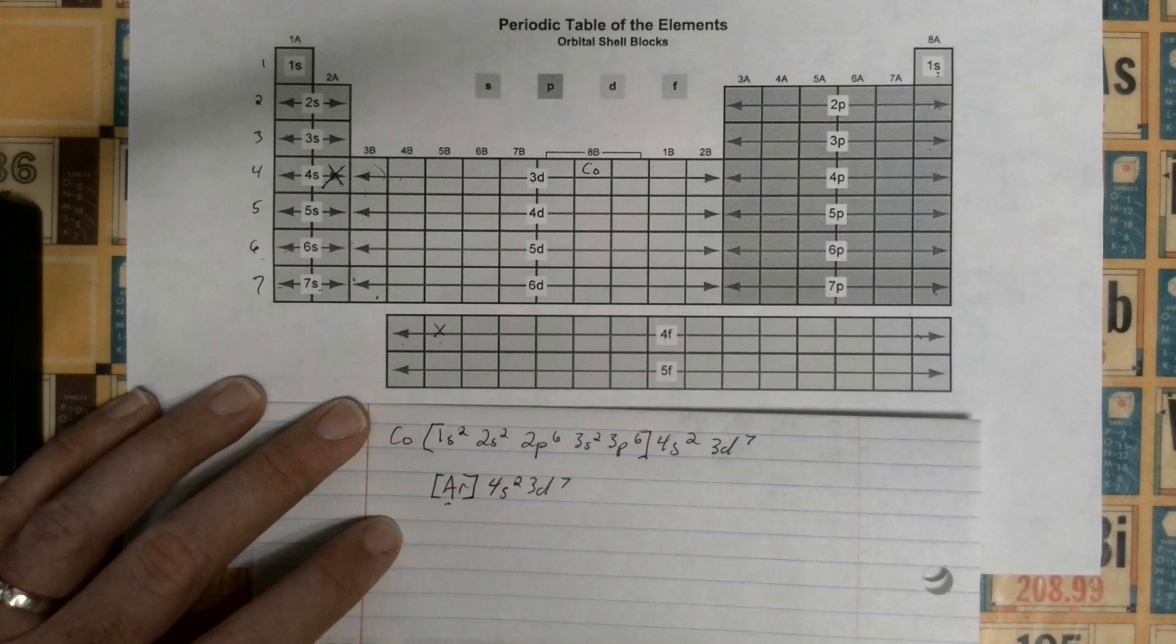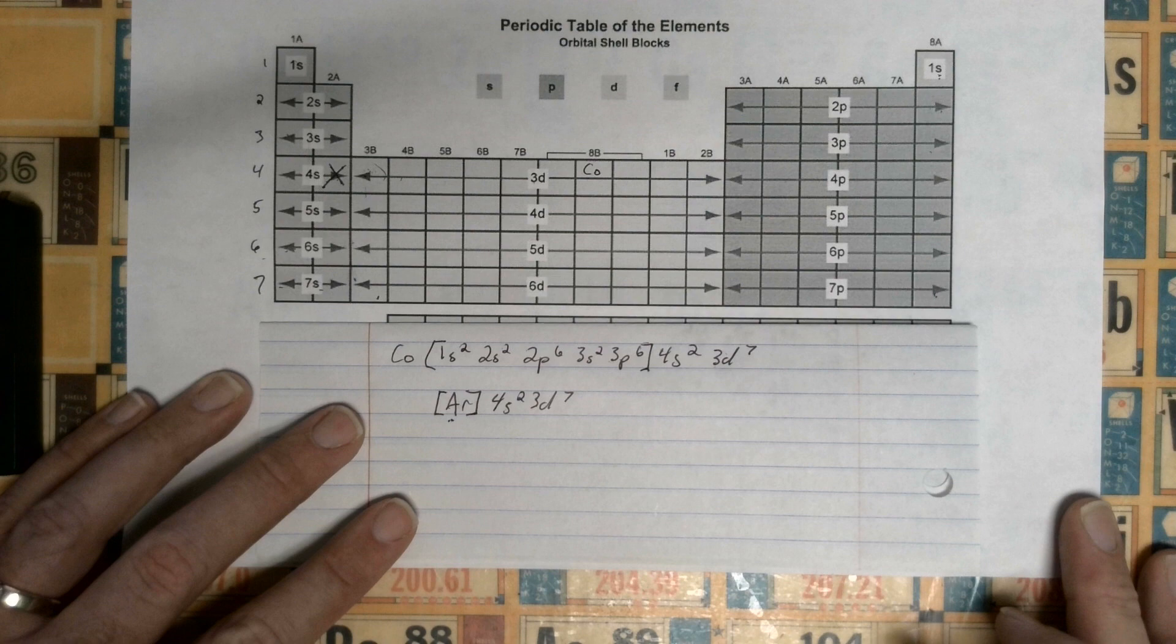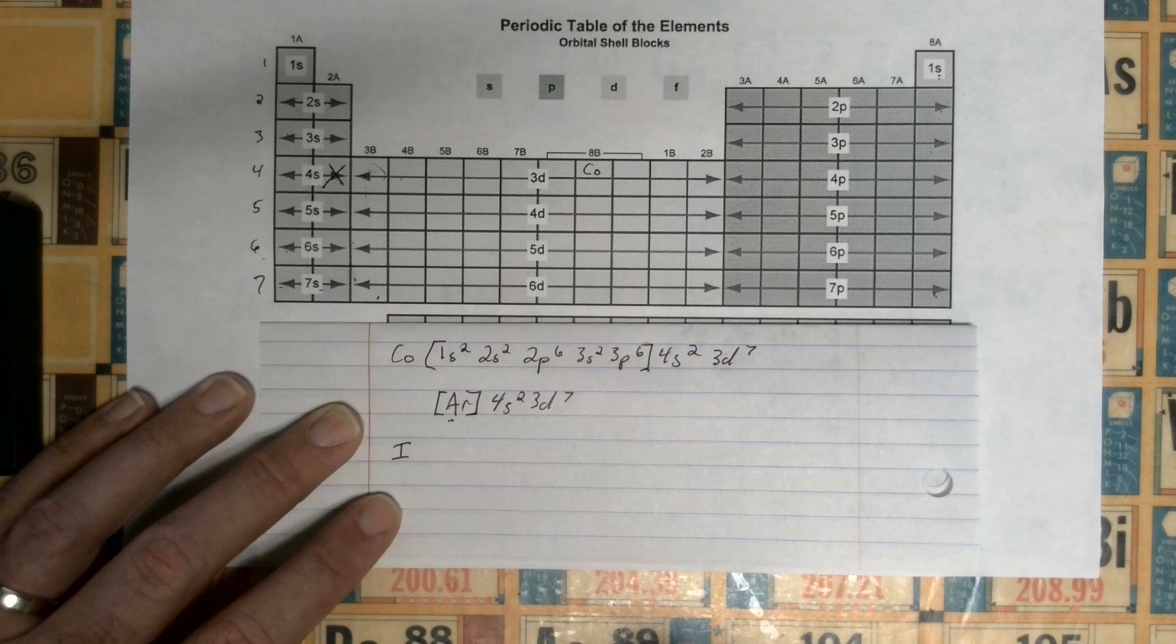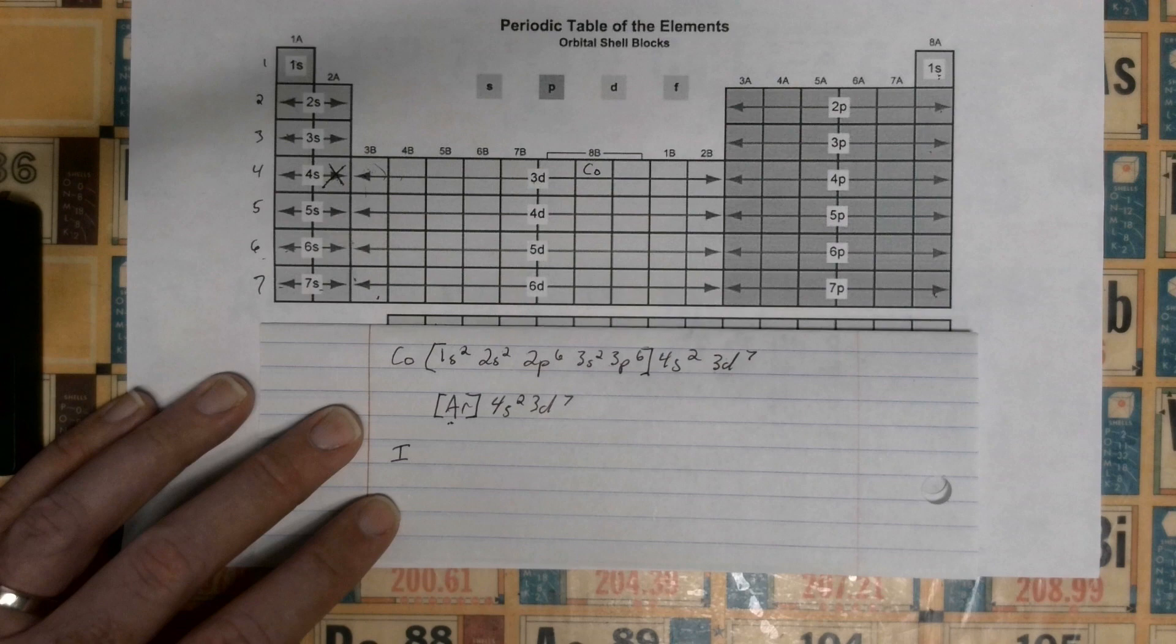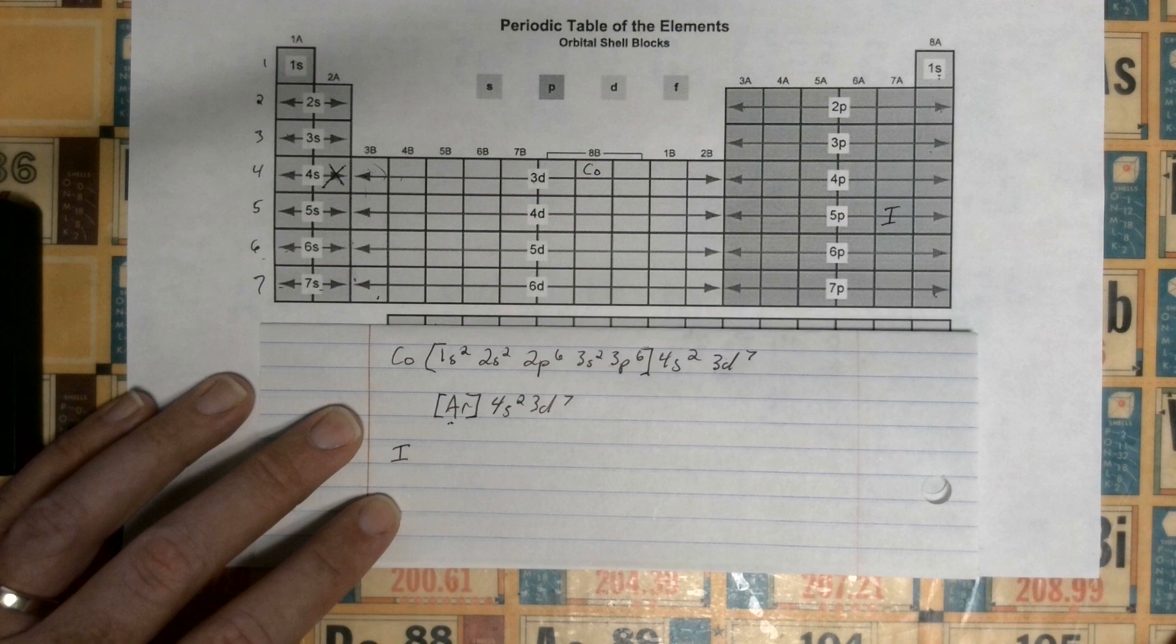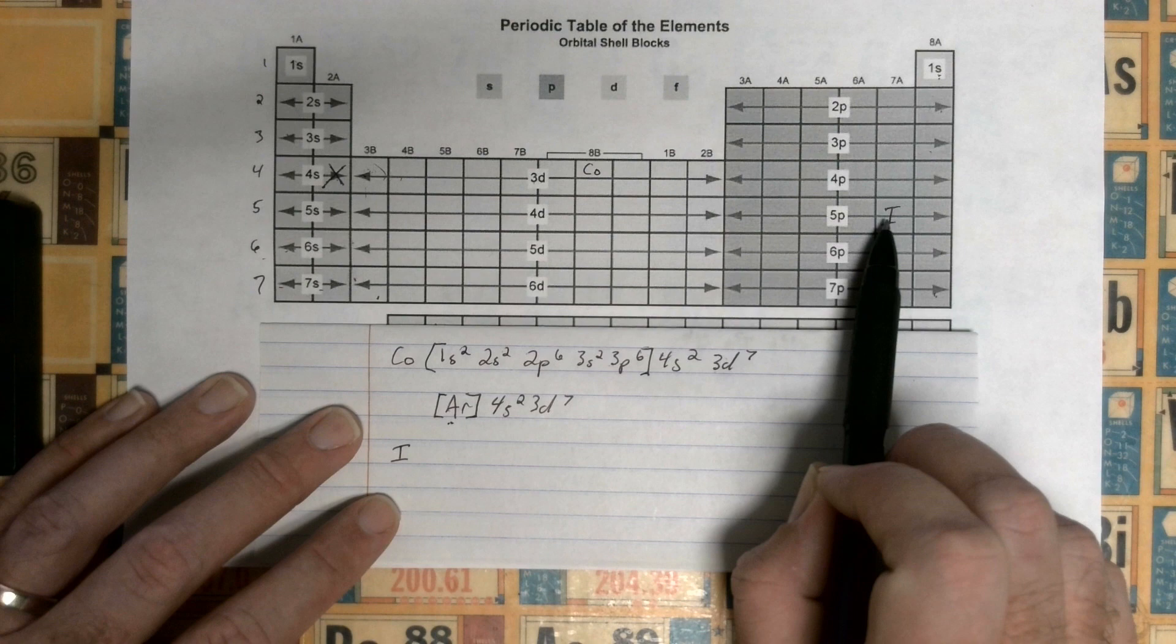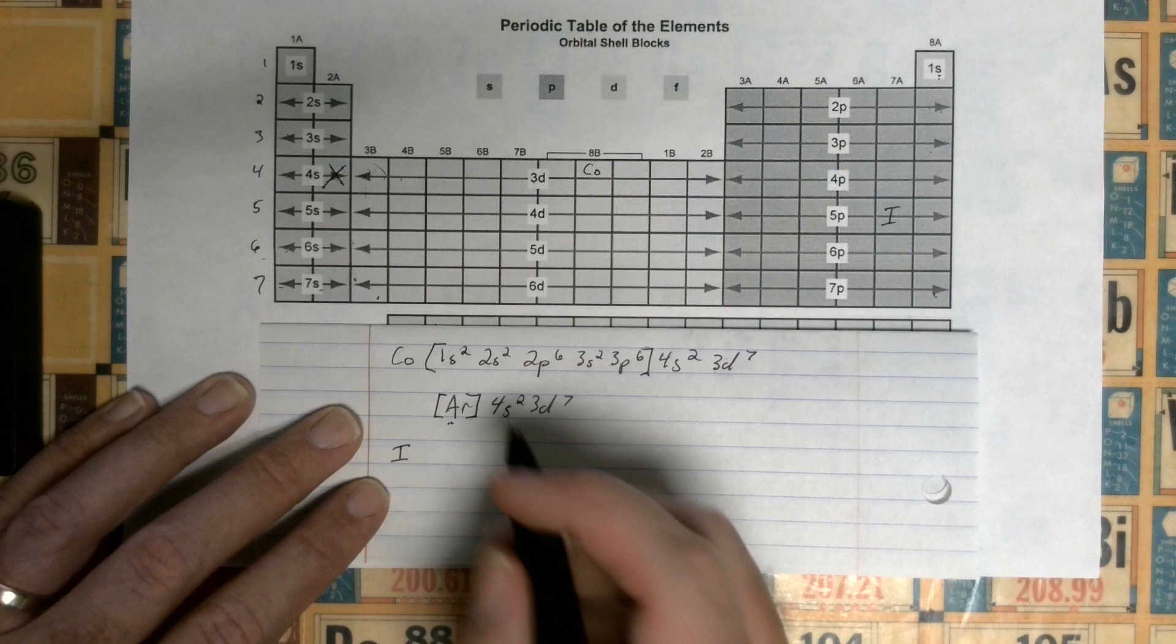Let's try another one. What about if we do Iodine? Iodine is number 53 on the periodic table. It's in the fifth row, it's like right here. This is Iodine. So if we go back to the previous noble gas, the previous noble gas would be the one that's in the fourth row, which would be Krypton, so we write Krypton.